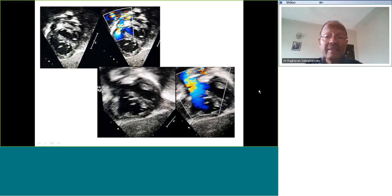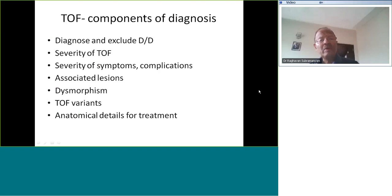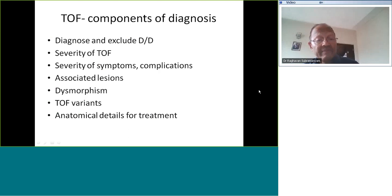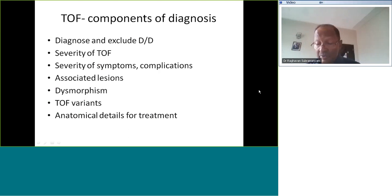You should be able to explain all these findings when shown an echo of Tetralogy in an examination - these are basic things but students often fumble. The components of a complete cardiologist's diagnosis must include: the anatomical diagnosis of Tetralogy, comment on severity, associated lesions, dysmorphic features, variants of Tetralogy, and anatomical details needed by the surgeon such as annulus diameter, branch pulmonary artery size, and coronary anatomy.